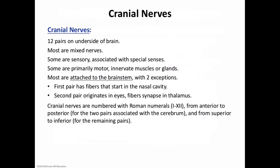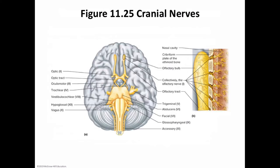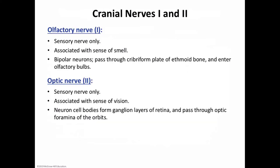The first pair of cranial nerves is the olfactory nerves, associated with the sense of smell. They are bipolar neurons that pass through the cribriform plate of the ethmoid bone and enter the olfactory bulbs. By way of the olfactory tracts in the cerebral hemispheres, they produce the sensation of smell.